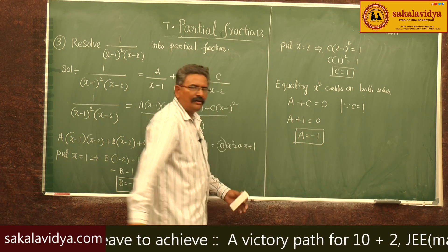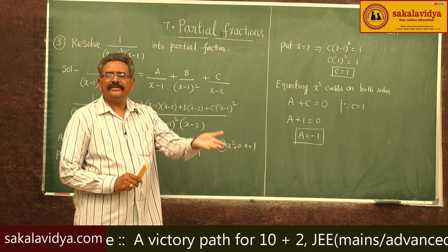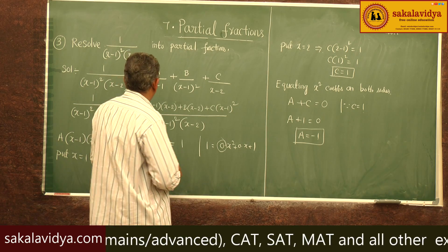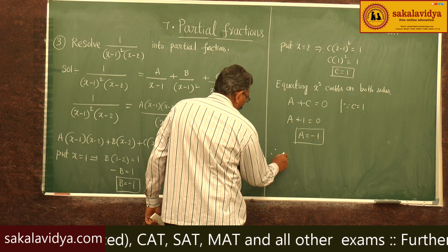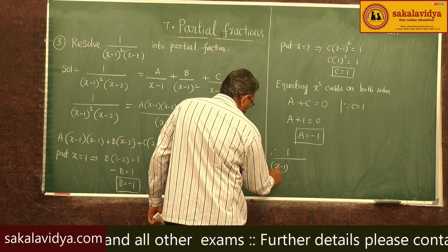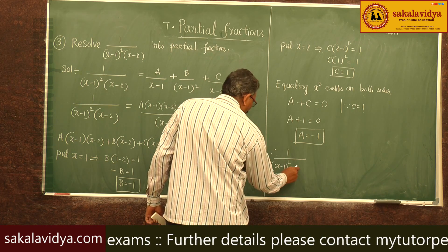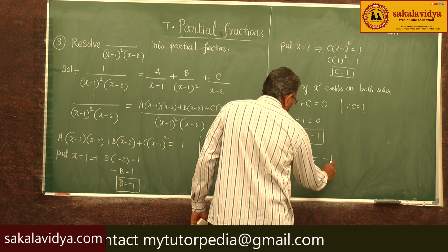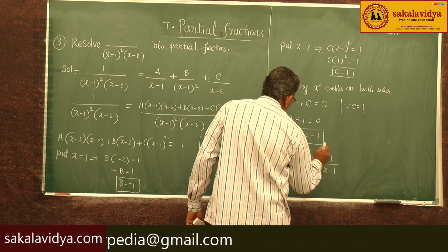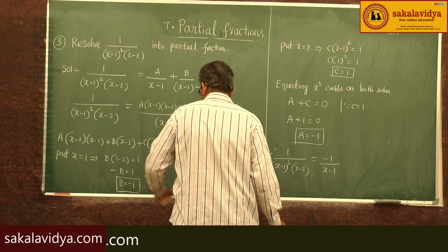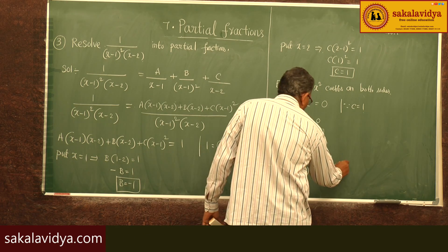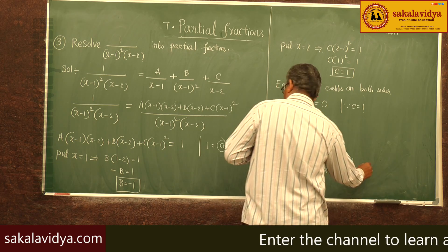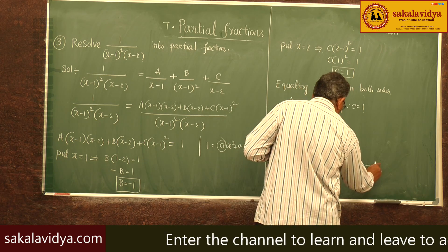Now all values A, B, and C have been determined. So we can write the partial fractions. Therefore: 1 by (x minus 1) squared (x minus 2) equals minus 1 by (x minus 1) plus minus 1 by (x minus 1) squared plus 1 by (x minus 2).